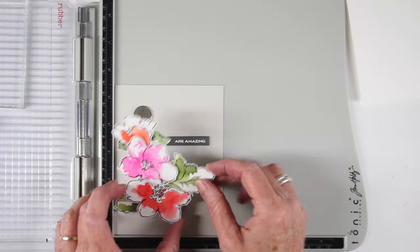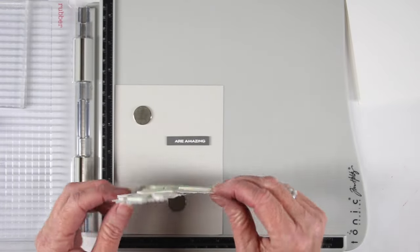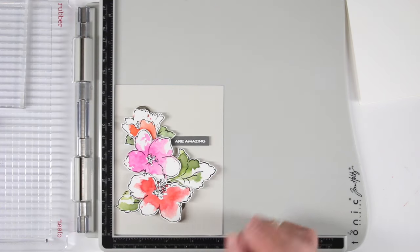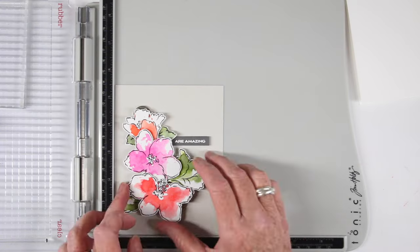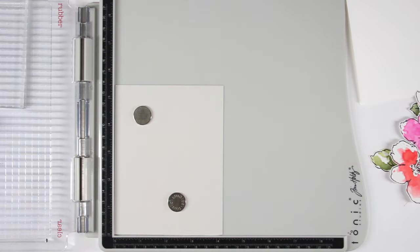At this point I have cut out all my flowers and I've put them in an arrangement that I like. And I've used some foam tape so that I get some really good lift and dimension. And I've also stamped a message that says, Are Awesome. And that's on a slate piece of cardstock from Simon Says Stamp.